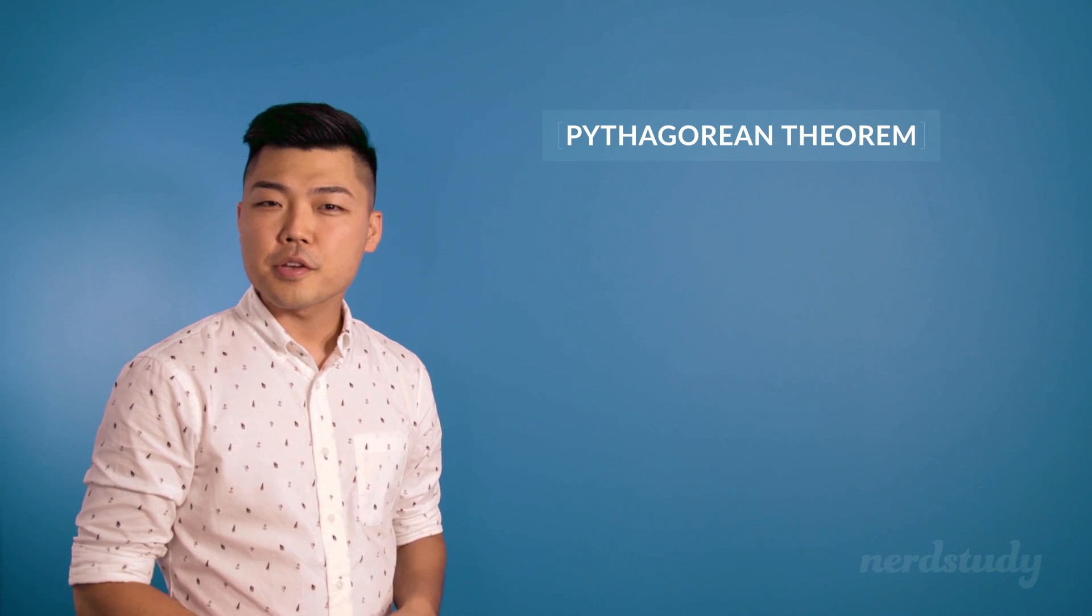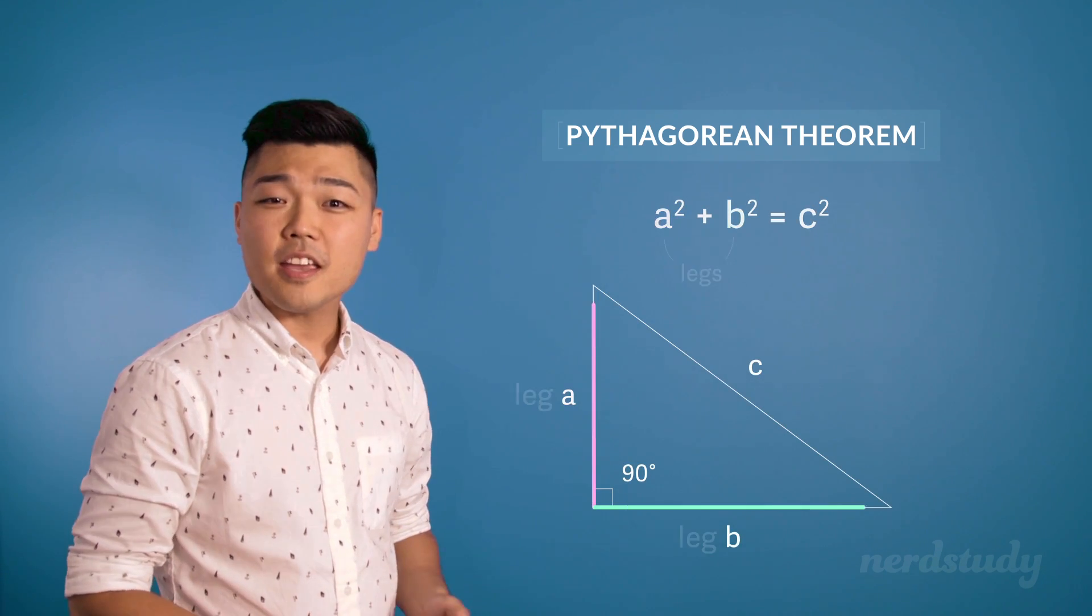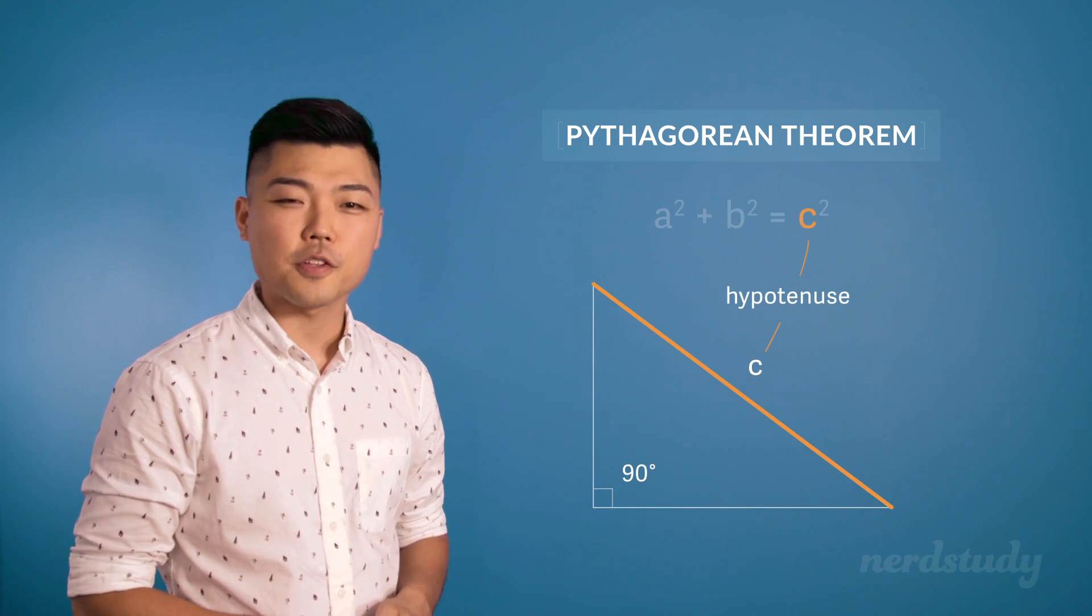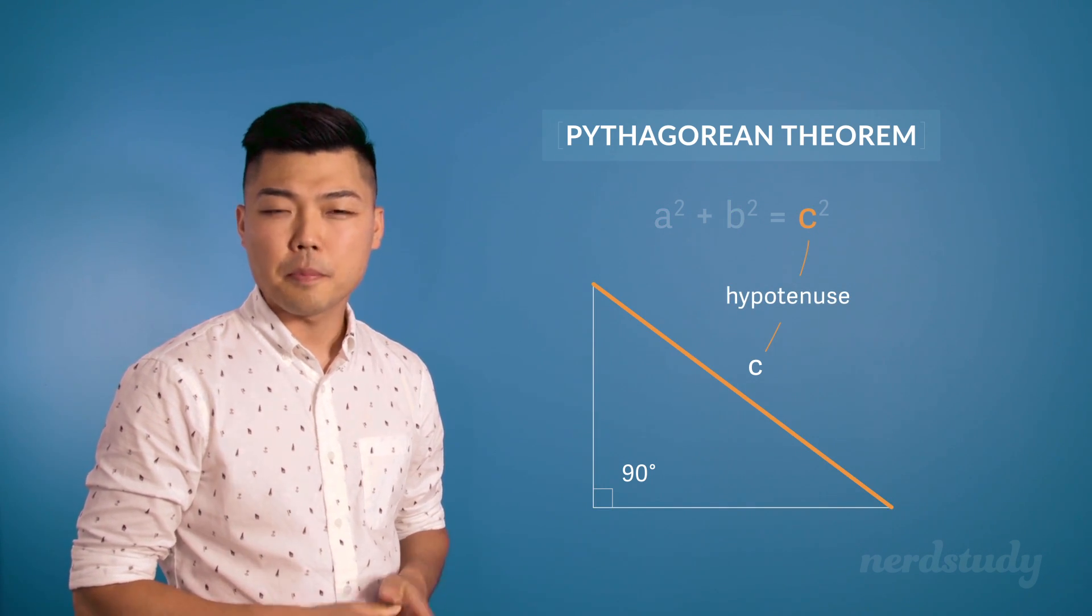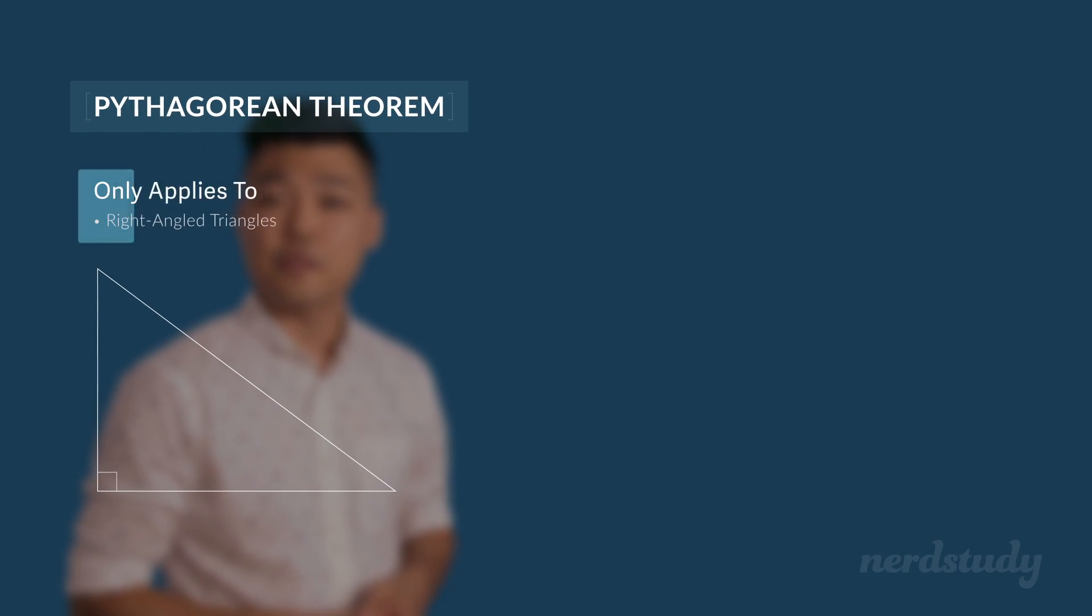So all you have to memorize is the Pythagorean theorem itself, and remember that a and b are referring to the legs, and that c is referring to the hypotenuse. But be careful and make sure that you are allowed to use the Pythagorean theorem before you rush off to use it.